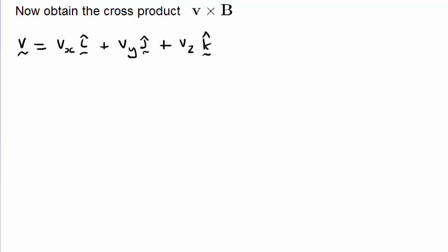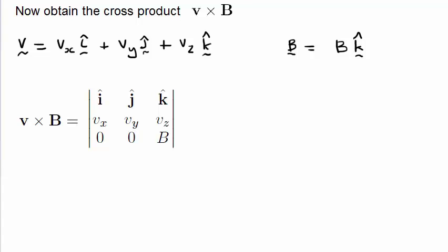Our magnetic field vector is along the z direction. To obtain the cross product v cross B, the cross product can be obtained from a determinant of the two vectors, where the top row is the unit vectors i, j, and k; the middle row is the components of the velocity vector; and the last row is the components of the magnetic field vector. Carrying out this determinant, we end up with the x, y, and z components of v cross B. Notice that the z component is zero, indicating that there is no force on the charged particle in the direction of the magnetic field, as you might expect.